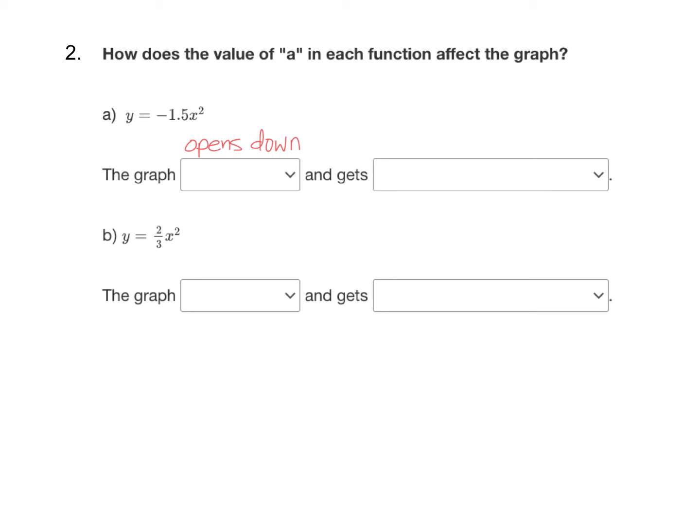And it gets, well, if we look at the absolute value of a, ignore the negative, it's one and a half. That's greater than one. So that means it's going to get narrower, which is a vertical stretch.